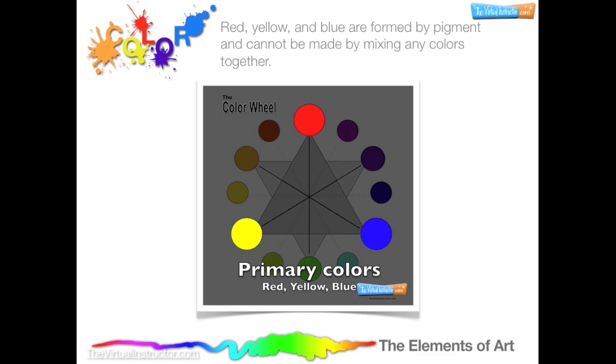Red, yellow, and blue are formed by pigment, and therefore cannot be made by mixing any two colors together.